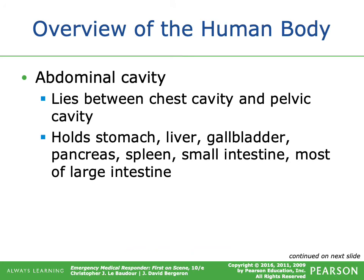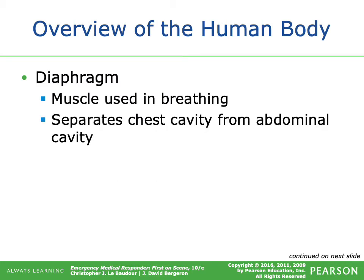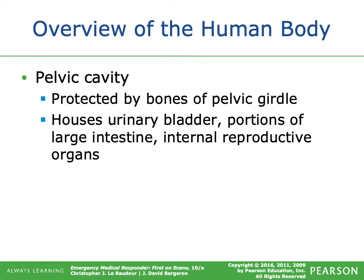The abdominal cavity lies between the chest cavity and the pelvic cavity. It holds the stomach, liver, gallbladder, pancreas, spleen, small intestine, and most of the large intestine. The diaphragm — the muscle we use in breathing — separates the chest cavity from the abdominal cavity. The pelvic cavity is protected by the bones of the pelvic girdle and houses the urinary bladder, portions of the large intestine, and internal reproductive organs.